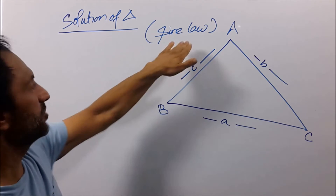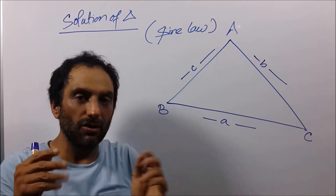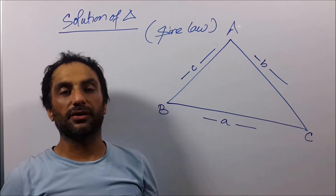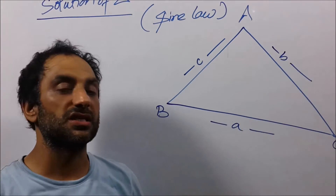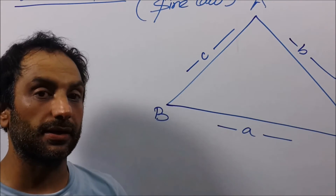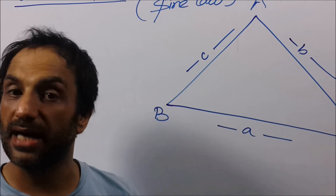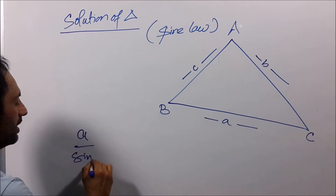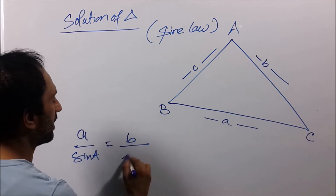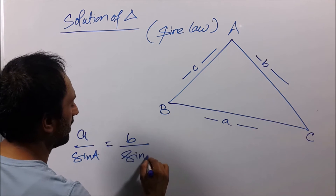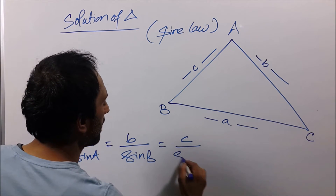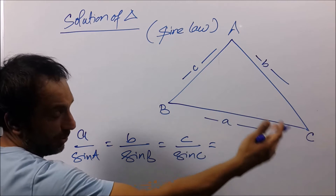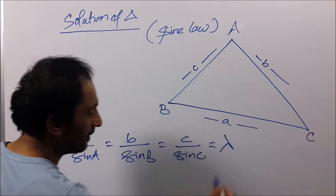Now coming on to sine law. Sine law says that the sides of the triangle are proportional to the sine of the angle opposite to them. That is, a/sin A equals b/sin B equals c/sin C, and that is equal to some proportionality constant, say lambda.